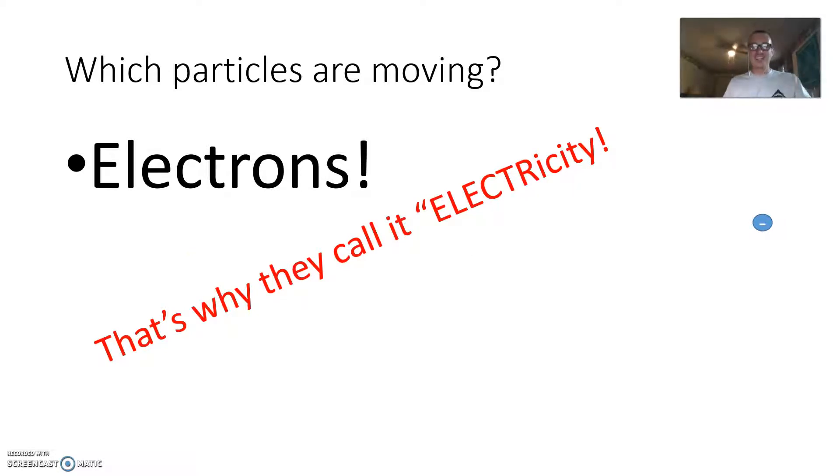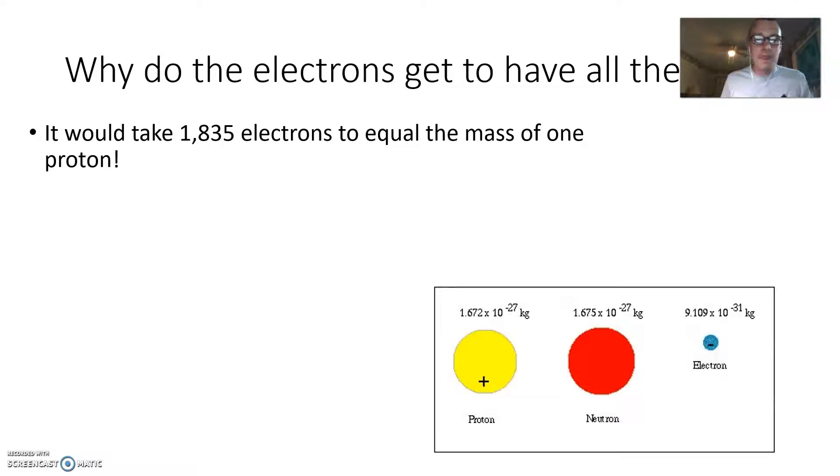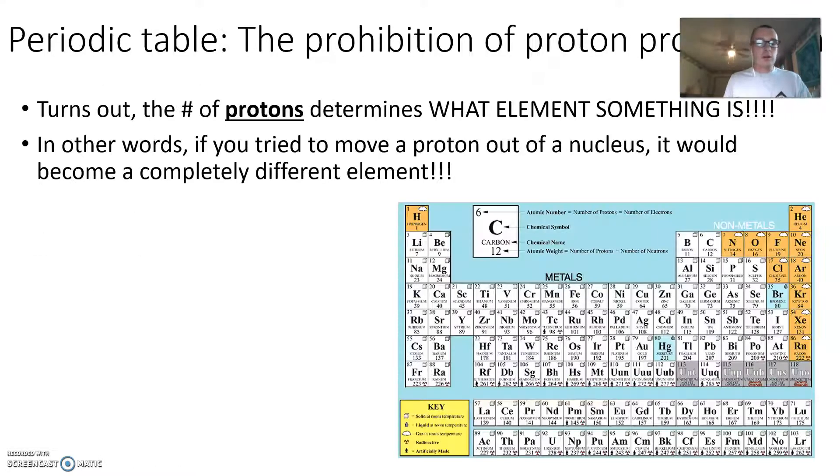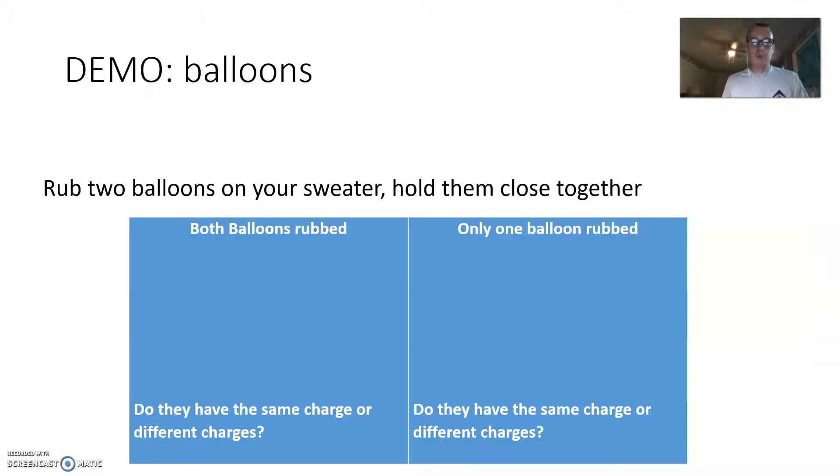That's why it's called electricity. Get it? Electricity? Electrons? So the electrons get to have all the fun because they're smaller and because they're easier to kind of pick off from the outside. And we already talked about why you can't move a proton.